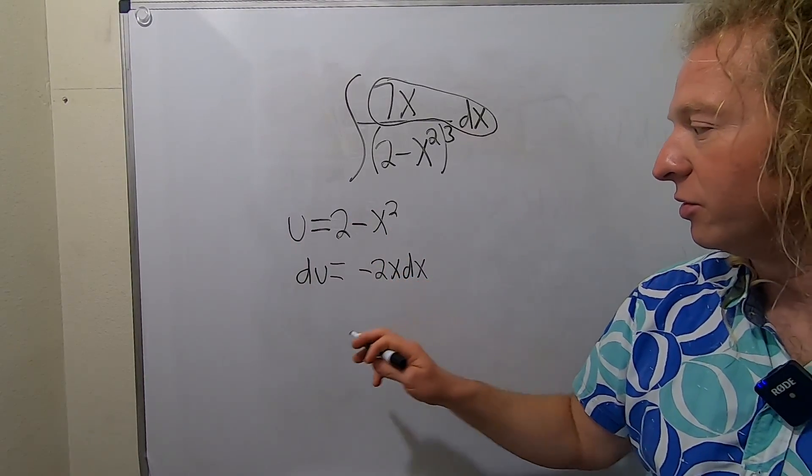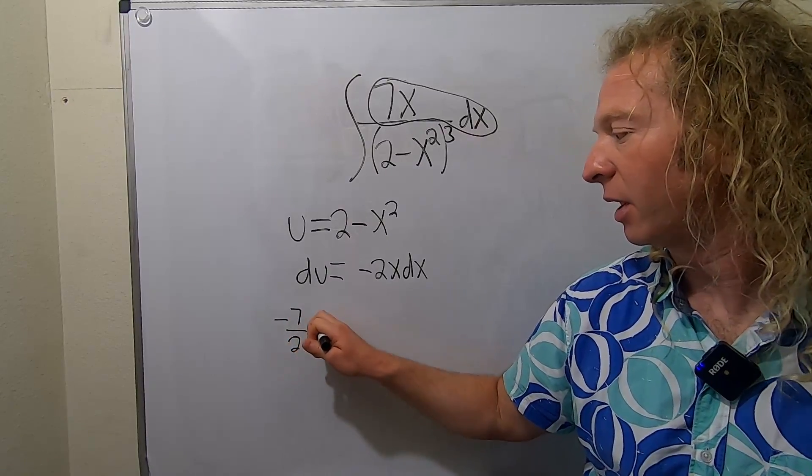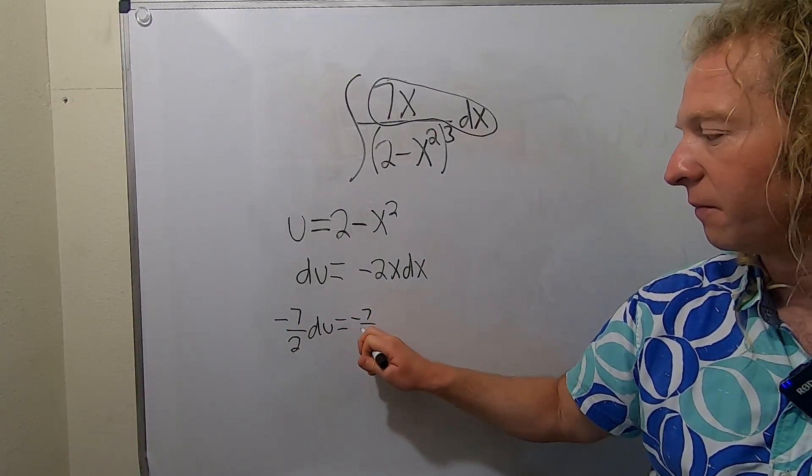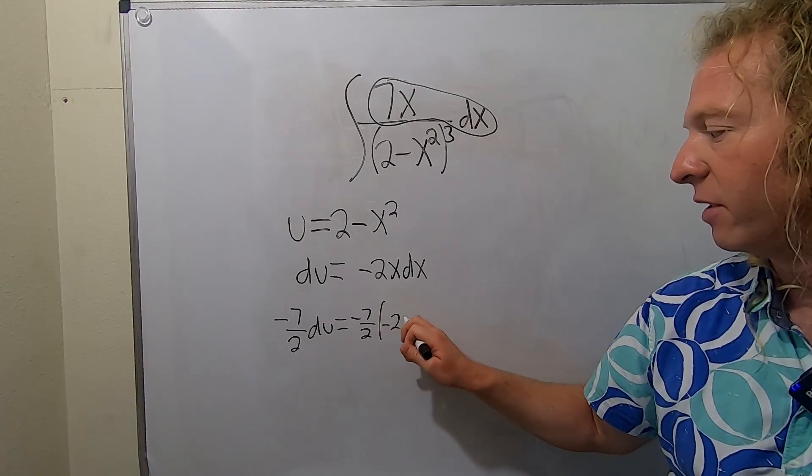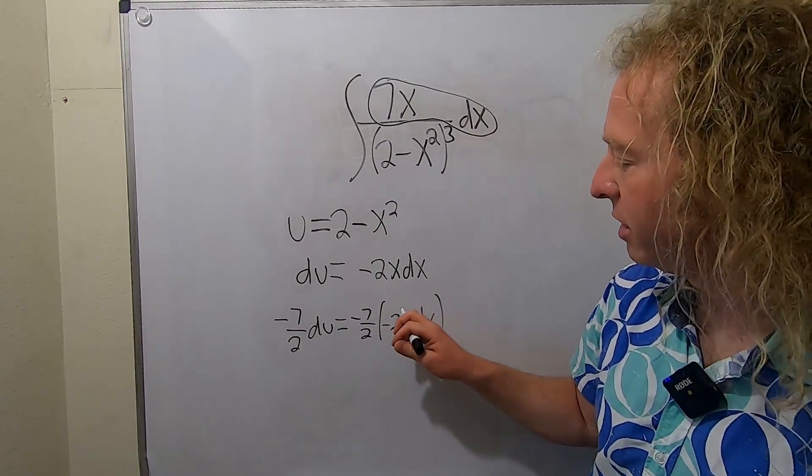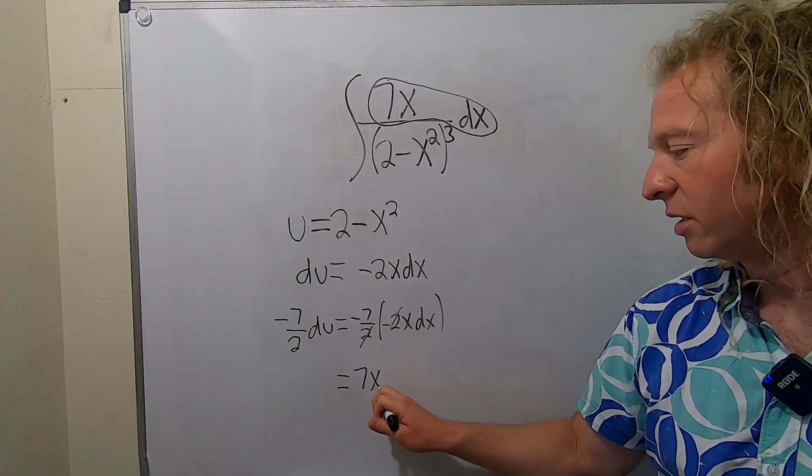We have to divide by negative 2 and multiply by 7. What you can do is multiply by negative 7 halves. So I put one here, I have to put one here, and you see what happens is that these cancel.